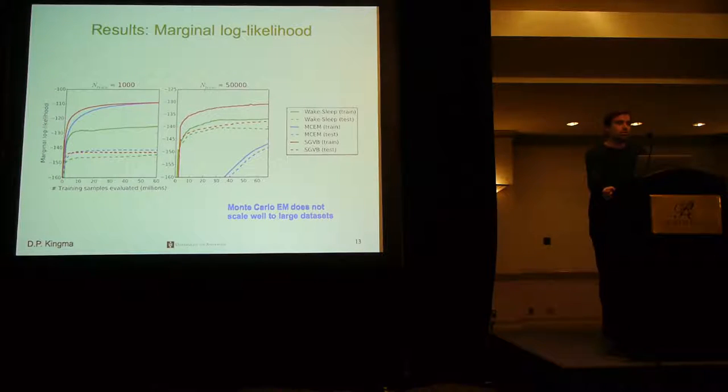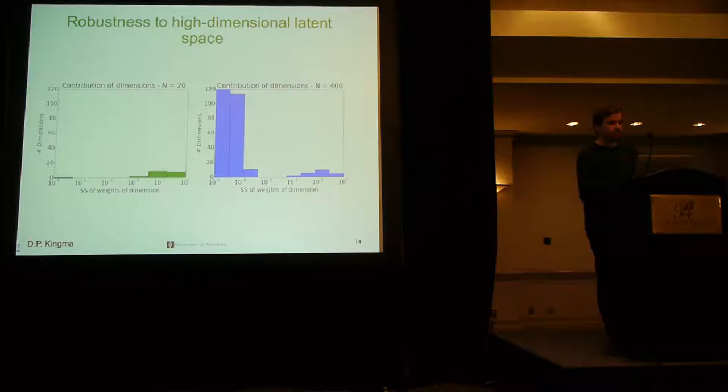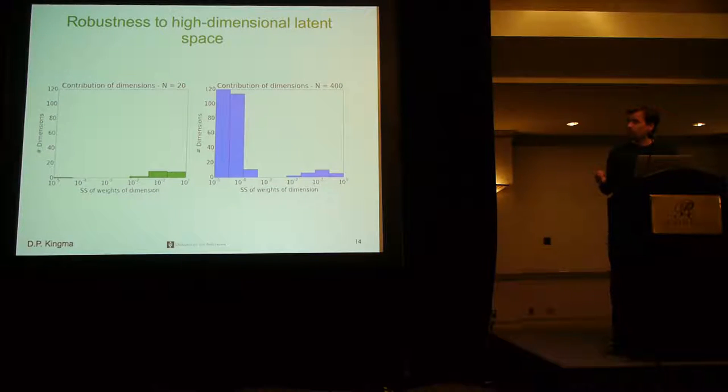We can also estimate the actual marginal likelihood using MCMC, so this is what we did here. Here we also compared to the Monte Carlo EM algorithm, which works for small data sets, however. For large data sets, it becomes slow because you have to run this MCMC chain per data point, which makes it quite slow if you cannot reuse the samples from the previous iteration. What is also nice about our method is that you don't really have to choose the dimensionality of Z, since it automatically regularizes Z into the number of dimensions that are actually useful for modeling your data.